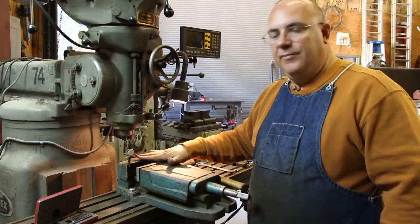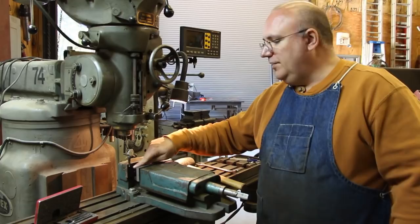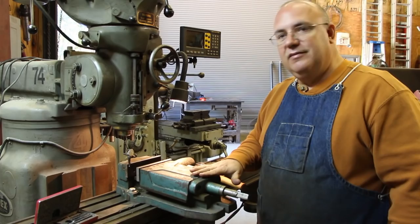To do that I'm going to use this last word indicator made by Starrett. Really most any kind of indicator could work here as long as you can get it in there, a little button style. This one works real well. It has a little finger that kind of comes down here and allows you to get down into an area such as this vise.